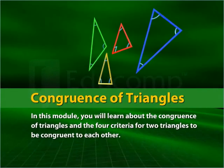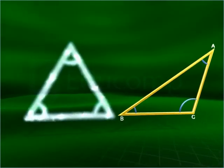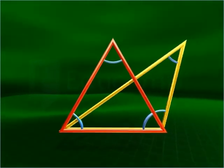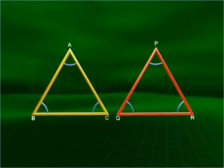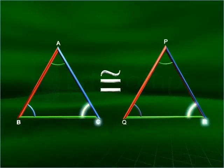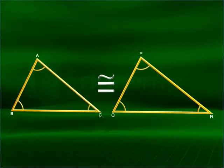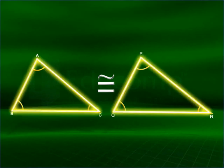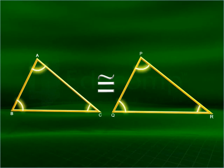Congruence of triangles. In this module, you learn about the congruence of triangles and the four criteria for two triangles to be congruent. Two triangles are congruent when you can superimpose one triangle on top of the other. Two triangles are congruent when the corresponding sides and angles are equal. For triangles to be congruent, the corresponding parts should be congruent — the corresponding line segments should be equal in length and the corresponding angles should have equal measurements.